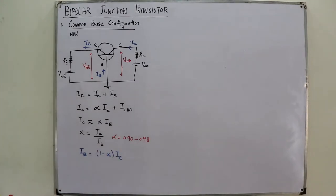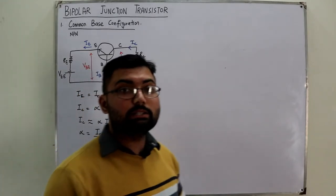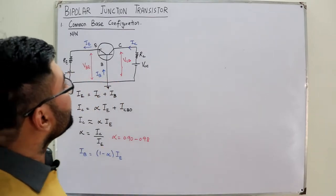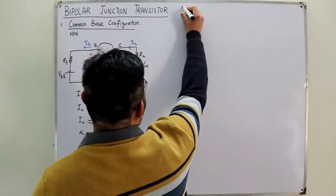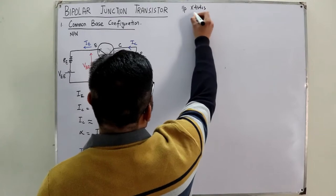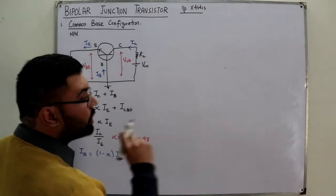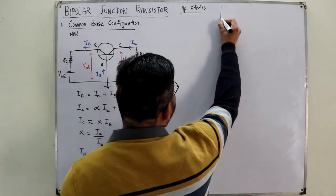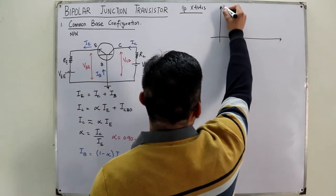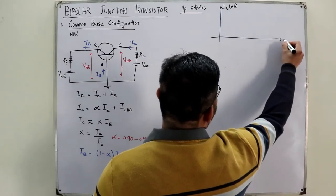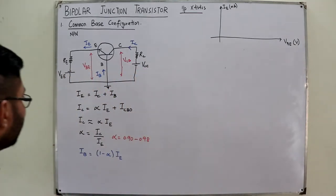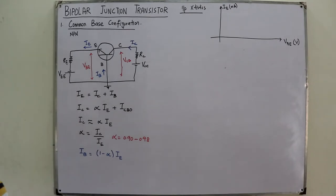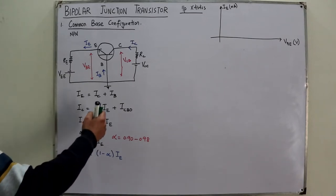To define the device properly we need two sets of characteristics. Number one is the input characteristics: the input current versus the input voltage. The input current here is IE and the input voltage is VBE. So you have a graph between IE, in the milliamperes range, and VBE in the volts range.